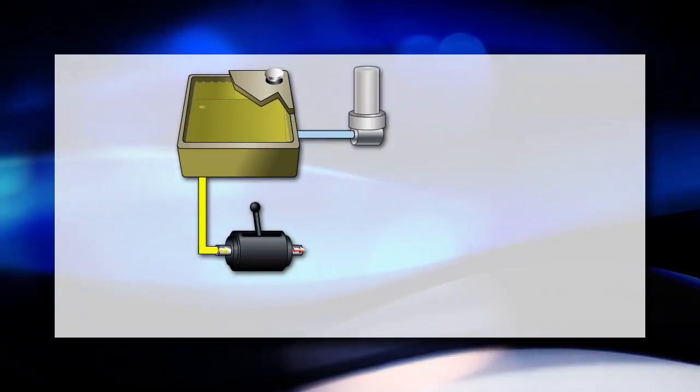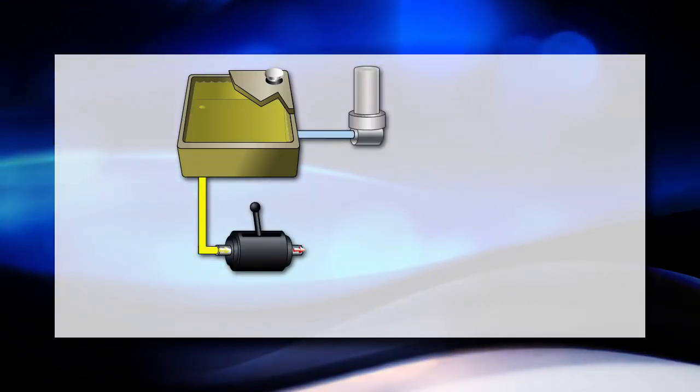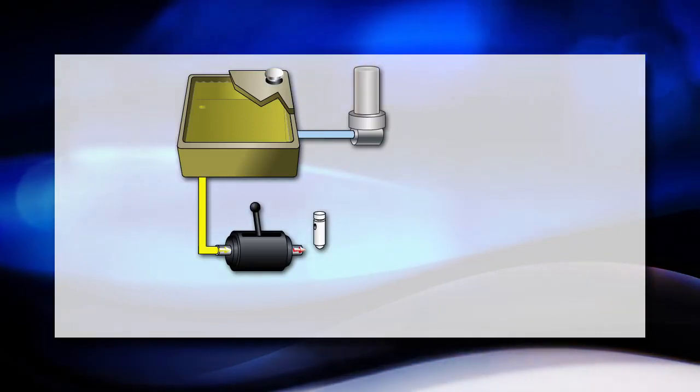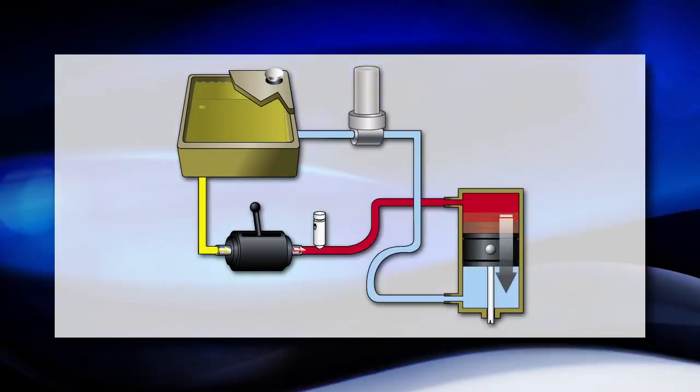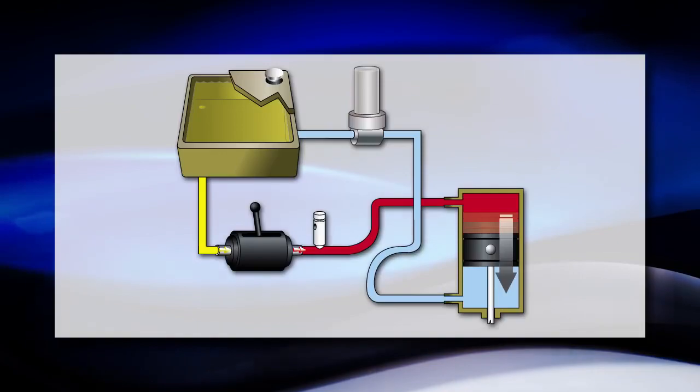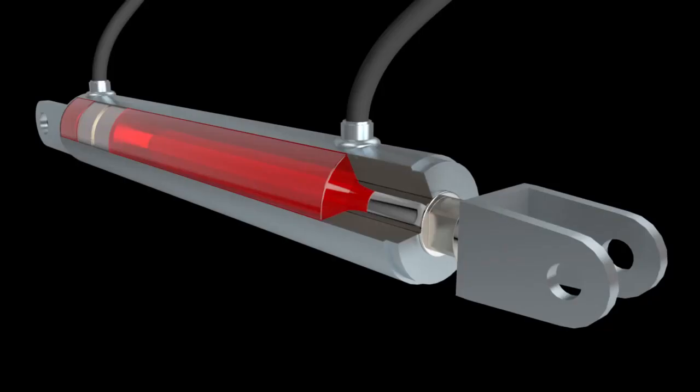Usually, a hydraulic system consists of a reservoir where the hydraulic fluid is stored, a pump that moves the fluid, a filter to keep contaminants out of the system, a relief valve in case of a hydraulic malfunction, and actuators which the hydraulic system operates.